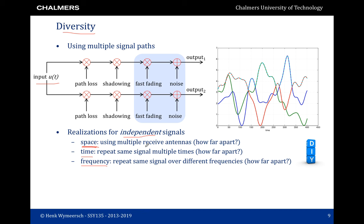There exist other combining methods beyond maximal ratio combining. Equal gain combining performs only co-phasing — aligning all branch phases — but does not account for amplitudes. Selection combining takes the best branch at each time instant and allows a closed-form expression for the output density, but yields an output SNR strictly less than MRC with fundamentally less array gain. There is also threshold combining, which is similar to selection combining but requires less switching between branches.